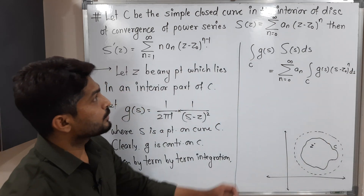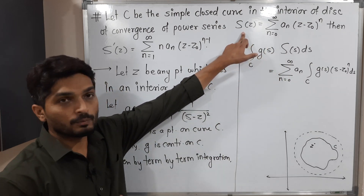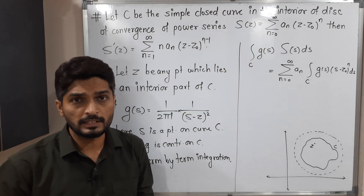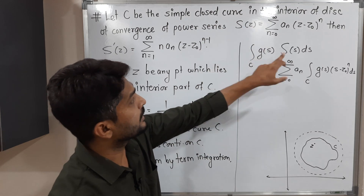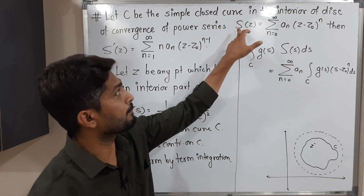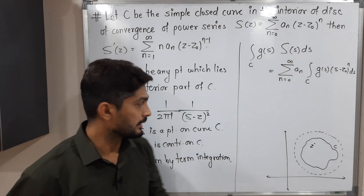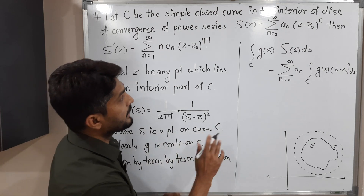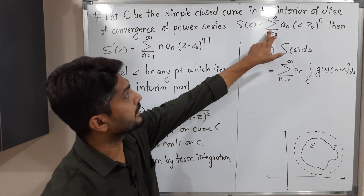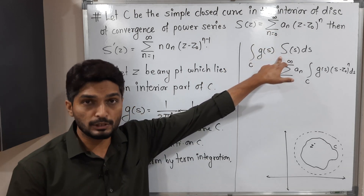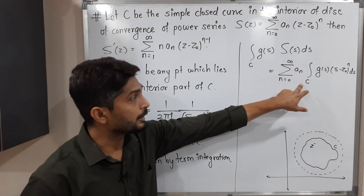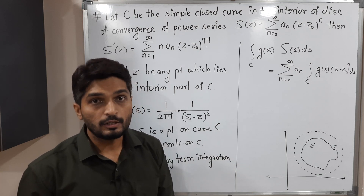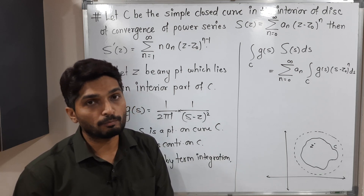Here S(s) denotes the power series with variable s — I have simply replaced z by s for convenience. Capital S is the power series and small s is the variable, a point on curve C. Term-by-term integration means we interchange the summation and integration: summation is moved outside and integration is inside. Let us call this equation number one.